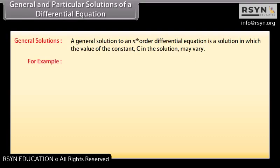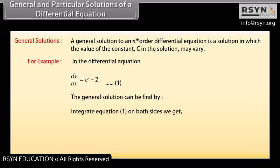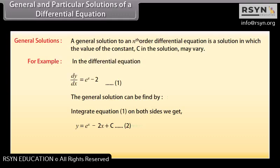For example, given the differential equation dy/dx = e^(x−2) (equation 1), the general solution can be found by integrating both sides: y = e^(x−2x) + c (equation 2). The value of c can be any constant because when we differentiate y, c becomes 0 as the derivative of a constant is 0.